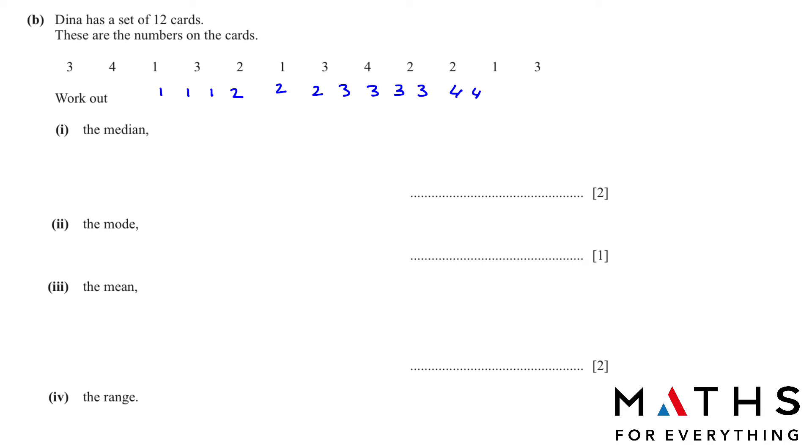Then what we will do is we will cancel one number from each end and we will see what is left in the middle. There will be two numbers. Whenever you have even numbers, you will be left with two numbers: 2 and 3. So you add them, 2 plus 3, and divide the answer by 2. This will give you 2.5.